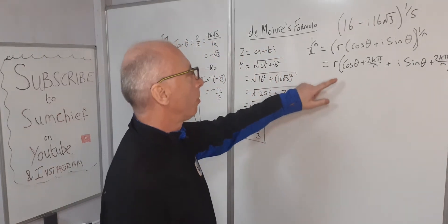And our last solution, when k = 4: we get 2·cos(−π/3 + 8π/5). That equals (−5 + 24)/15 = 19/15. So the solution is 2·(cos(19π/15) + i·sin(19π/15)).